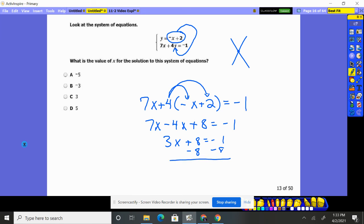Move my 8 over, subtract it from both sides. 3x is negative 9. We are there. x is negative 3. Look at us, choice B. We are champions here, people.